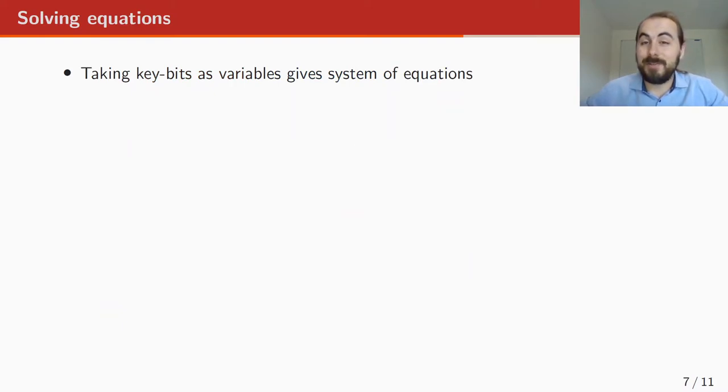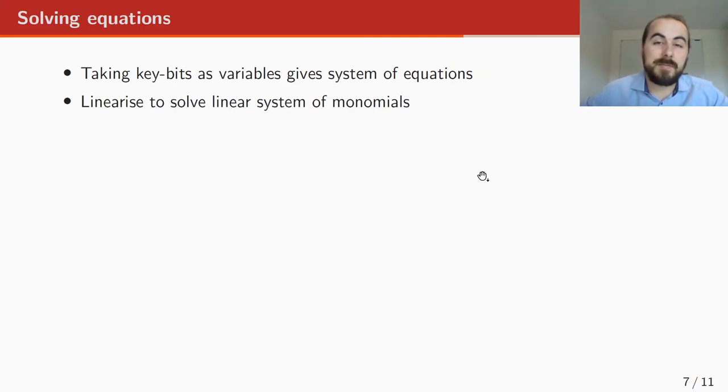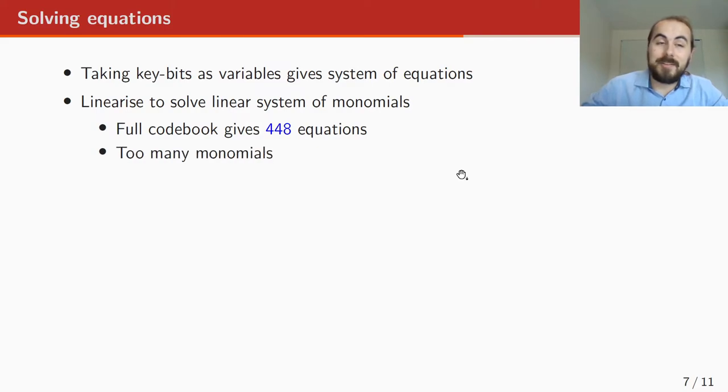So how do you solve polynomial systems of equations? The easiest is to linearize the system. And so we need to replace every monomial with a variable. And then we have a linear system, we can do Gaussian elimination to solve it. If we apply the full codebook, so for all possible ciphertexts, we compute the plaintext and we compute all the, or actually pre-compute all the equations that we can for a variable key, we get 448 equations. If we want to be able to solve the system, the number of variables, in our case would be number of monomials, should be at most 448. But, unfortunately, we have way too many monomials at this point. So what can we do? We need to decrease the number of monomials, and for that we have some tricks.